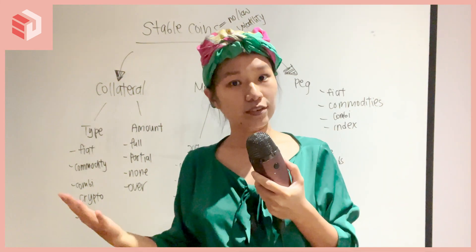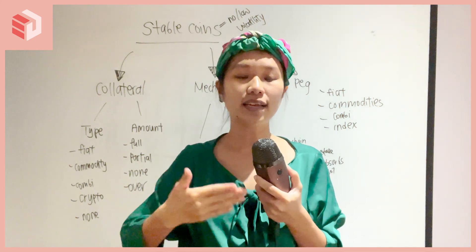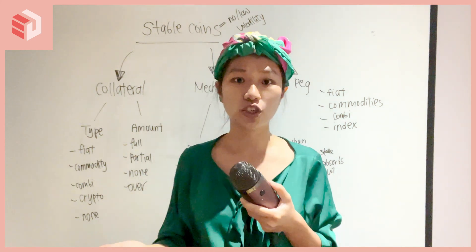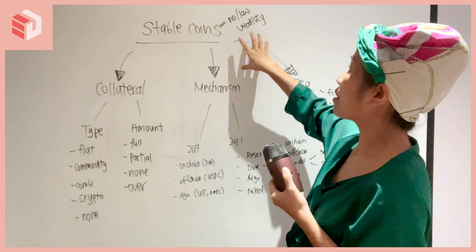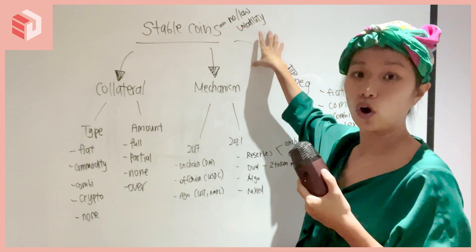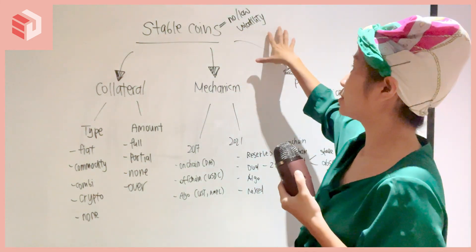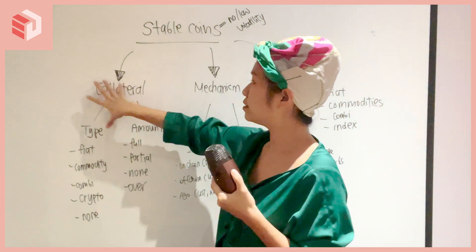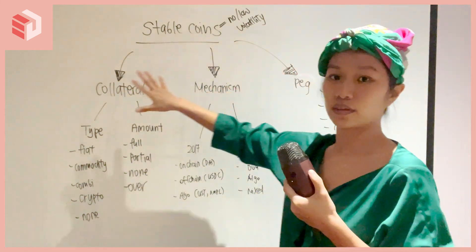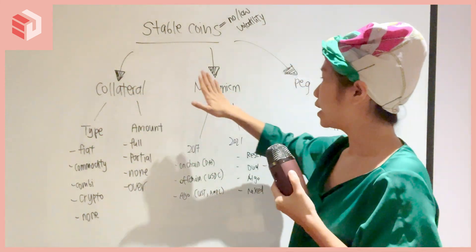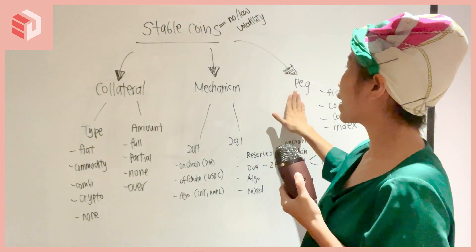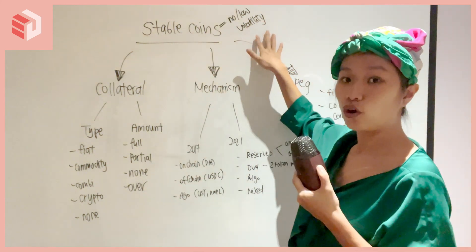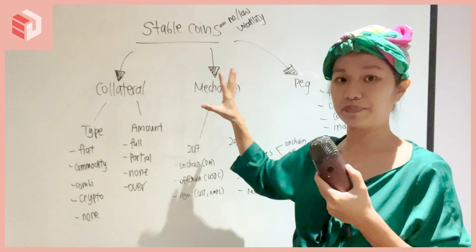The word stablecoin means that prices are quite stable — they don't change so much — and we see that with prices having low or no volatility. So what we want to do is use these tools — the collateral, the different mechanisms, and the PEG — to create this output where we have low or no volatility. That's key.